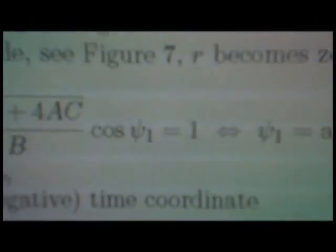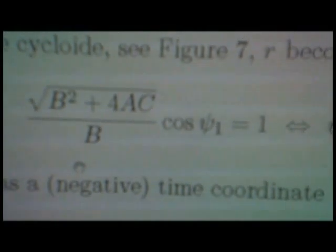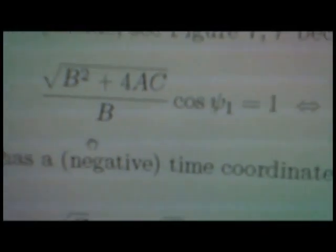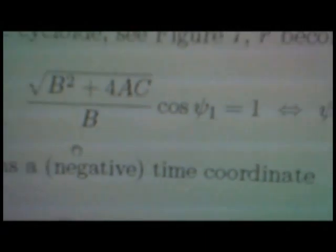When square root b squared plus 4ac over b times cos psi 1 is equal to 1, because then the 1 minus this expression is 0. Which is equivalent, psi 1 is equal to arcus cosinus of b over square root b squared plus 4ac.